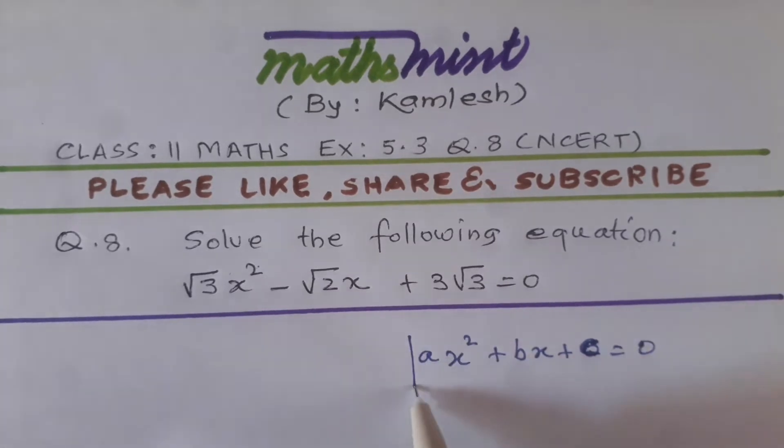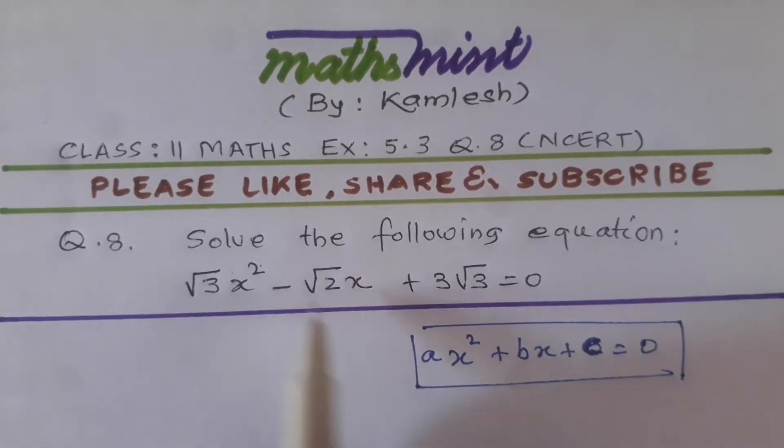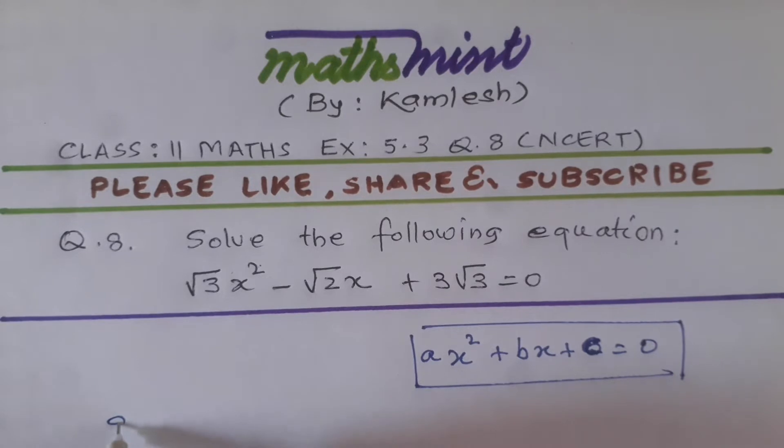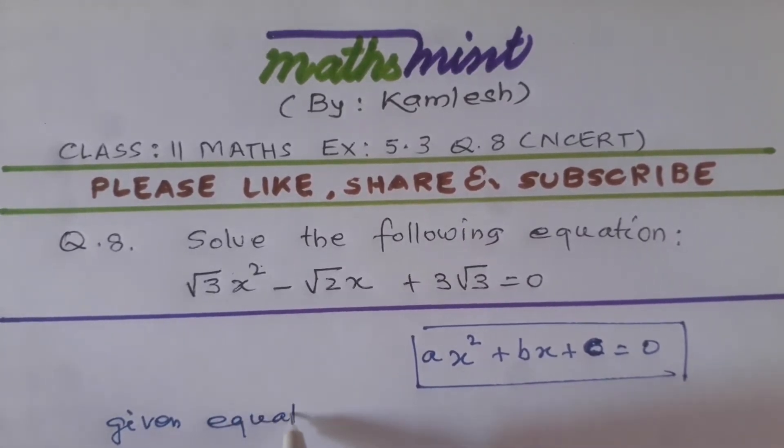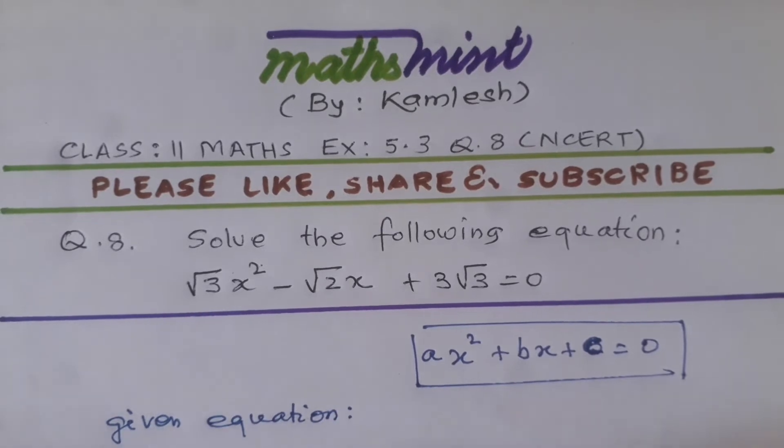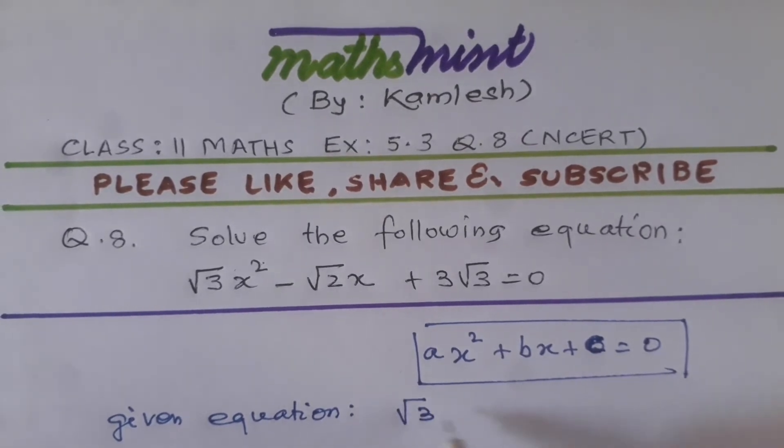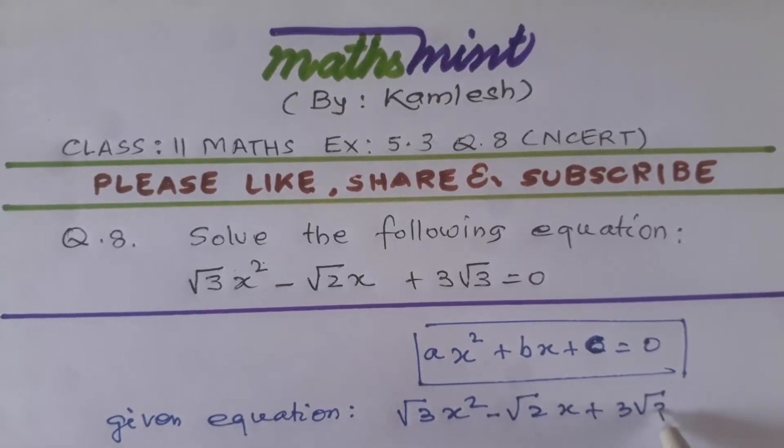This is the form of quadratic equation. Our given equation is root 3 x squared minus root 2 x plus 3 root 3.